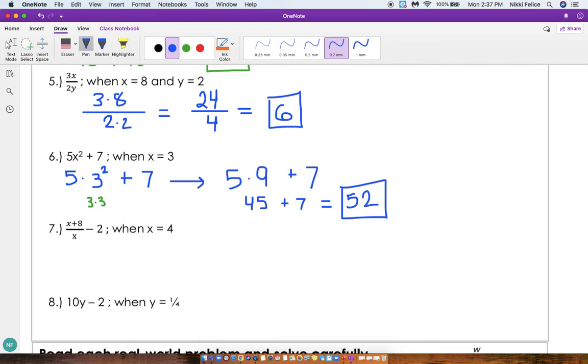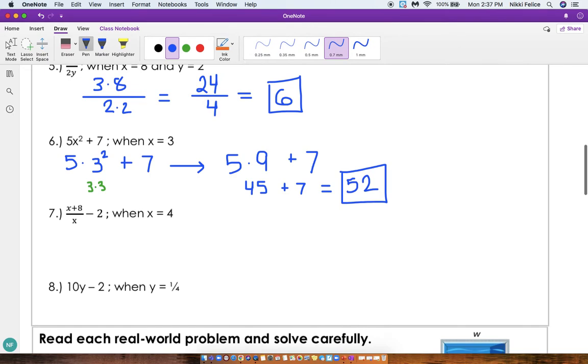Number 7 is x plus 8 all divided by x minus 2 when x equals 4. So I'm going to take this 4 and substitute it in for the variable x. So we're going to have 4 plus 8 divided by 4 minus 2. Now I'm going to start evaluating this fraction part first. So this is going to equal 4 plus 8 is 12, so this is going to be 12 divided by 4 minus 2. Well we know that 12 divided by 4 is 3, so this is going to be 3 minus 2. So our solution is 1.